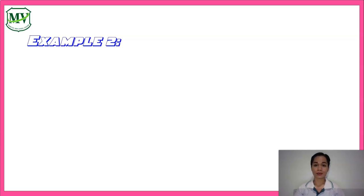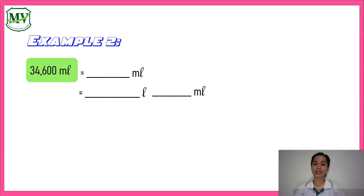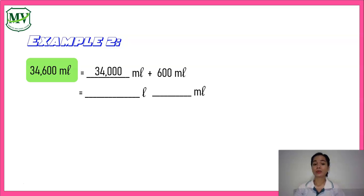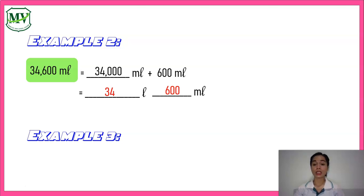Next, convert thirty-four thousand six hundred milliliters into liters and milliliters. We can rewrite thirty-four thousand six hundred milliliters by grouping the thousands. So we can say that thirty-four thousand six hundred milliliters is equal to thirty-four liters and six hundred milliliters.